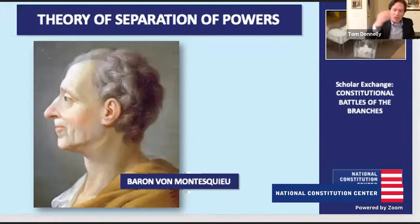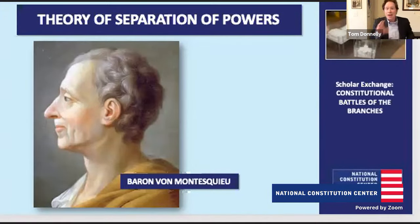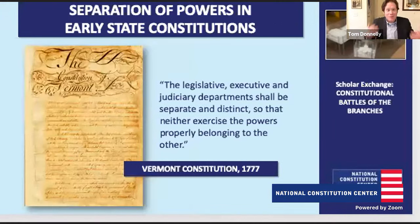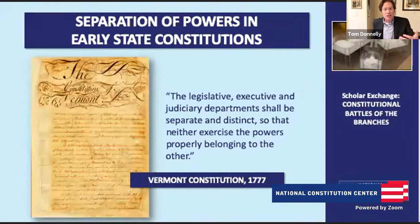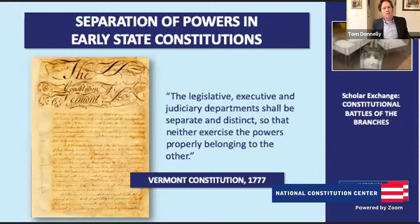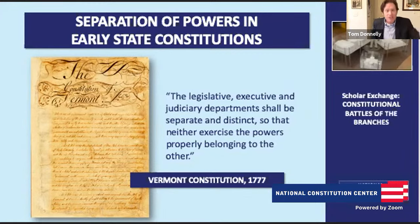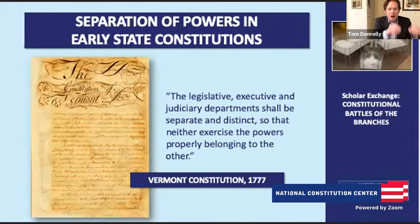The framers were reading Montesquieu and Locke, thinking about English history, as they began to think about separation of powers. They were also learning from their own experience creating state governments. Looking at state constitutions — like George Mason's famous Virginia Declaration of Rights — you see explicit language talking about separation of powers: separate means separate, executive, legislative, judicial. The framers really bought into the strict separation of powers seen in Montesquieu.